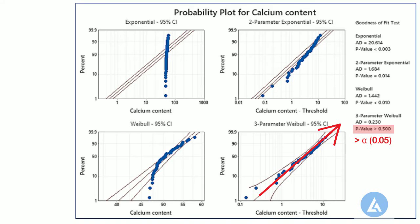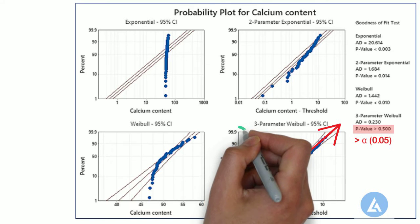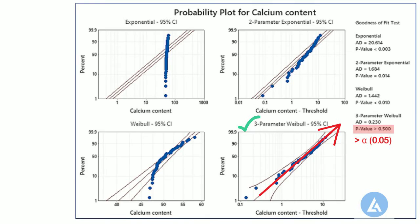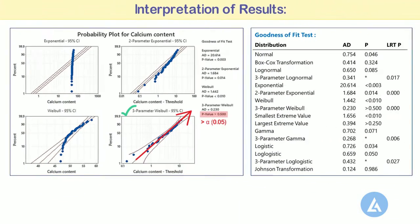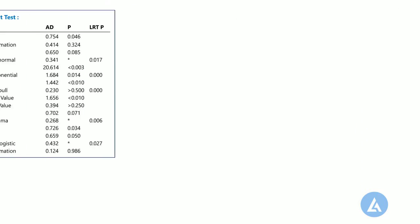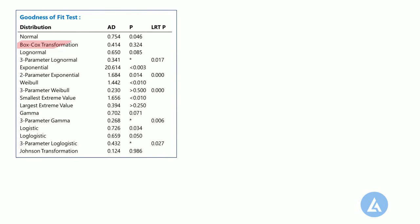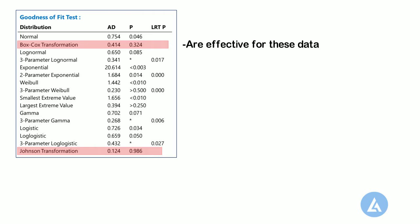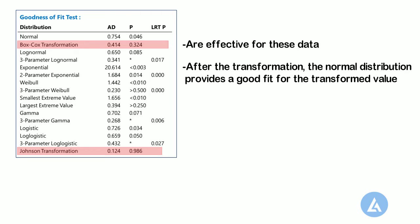For this data, the three-parameter Weibull distribution having a p-value greater than 0.5, and the largest extreme value distribution having a p-value greater than 0.25, are a good fit for the data. The Box-Cox transformation having a p-value of 0.324, and the Johnson transformation having a p-value of 0.986, are effective for this data. After the transformation, the normal distribution provides a good fit for the transformed values.